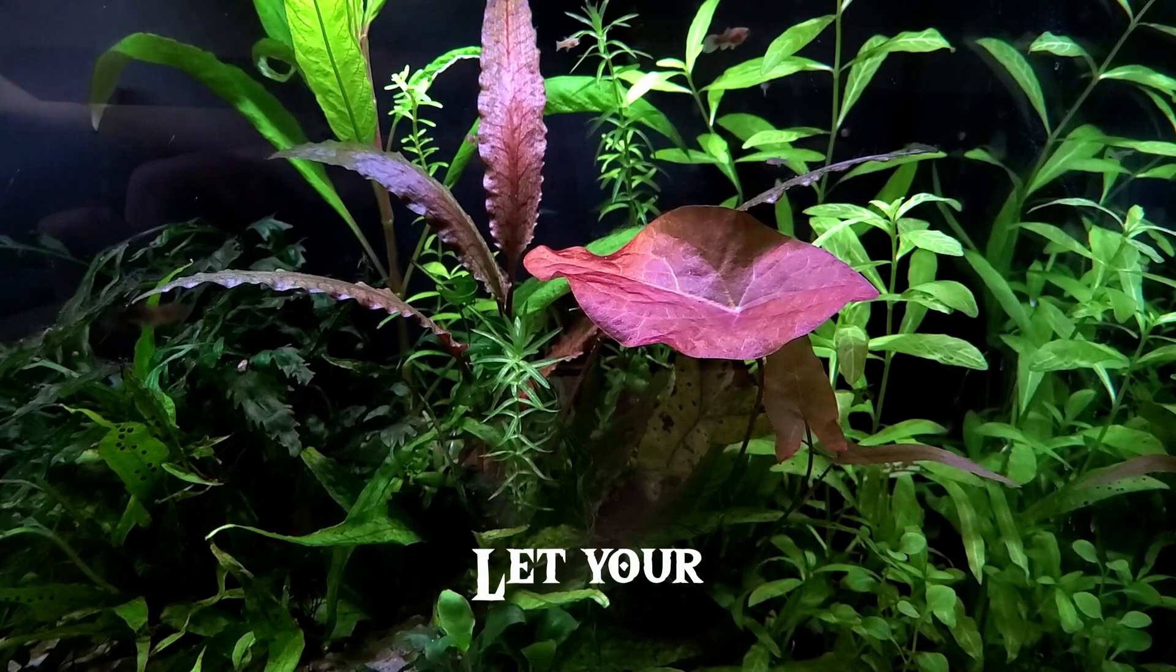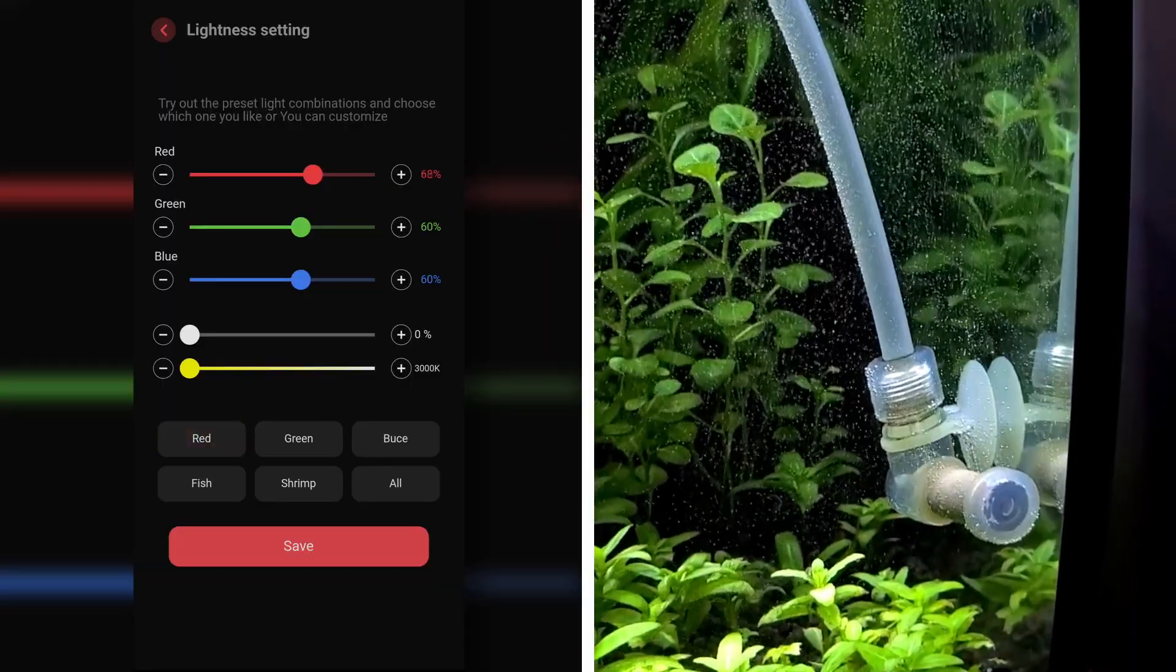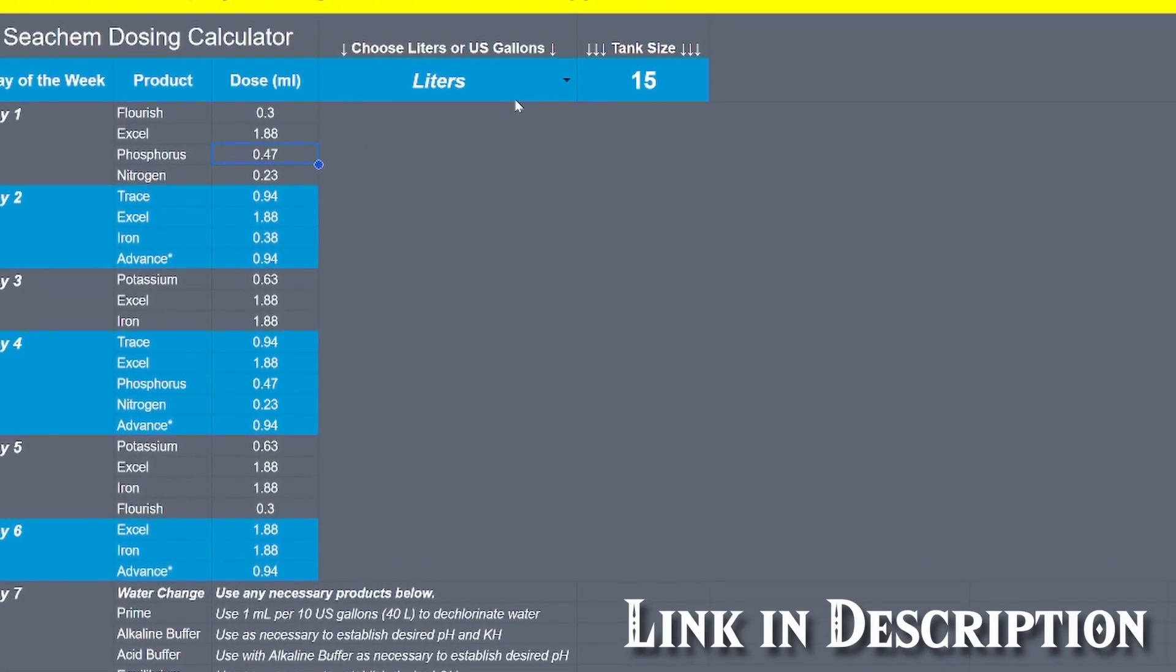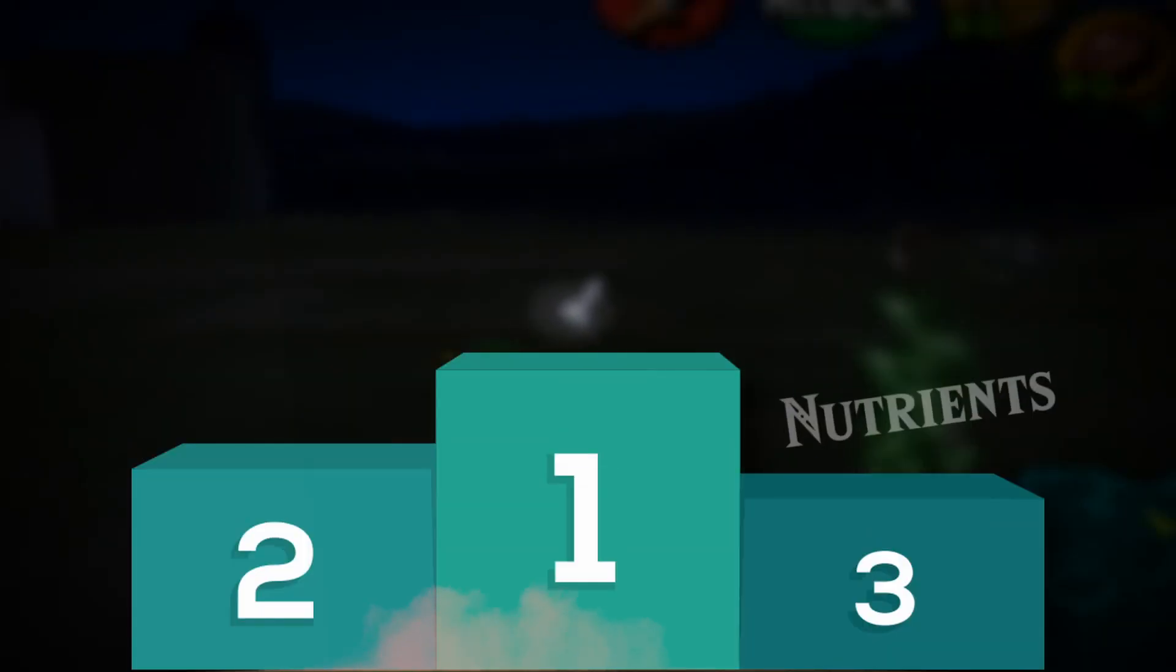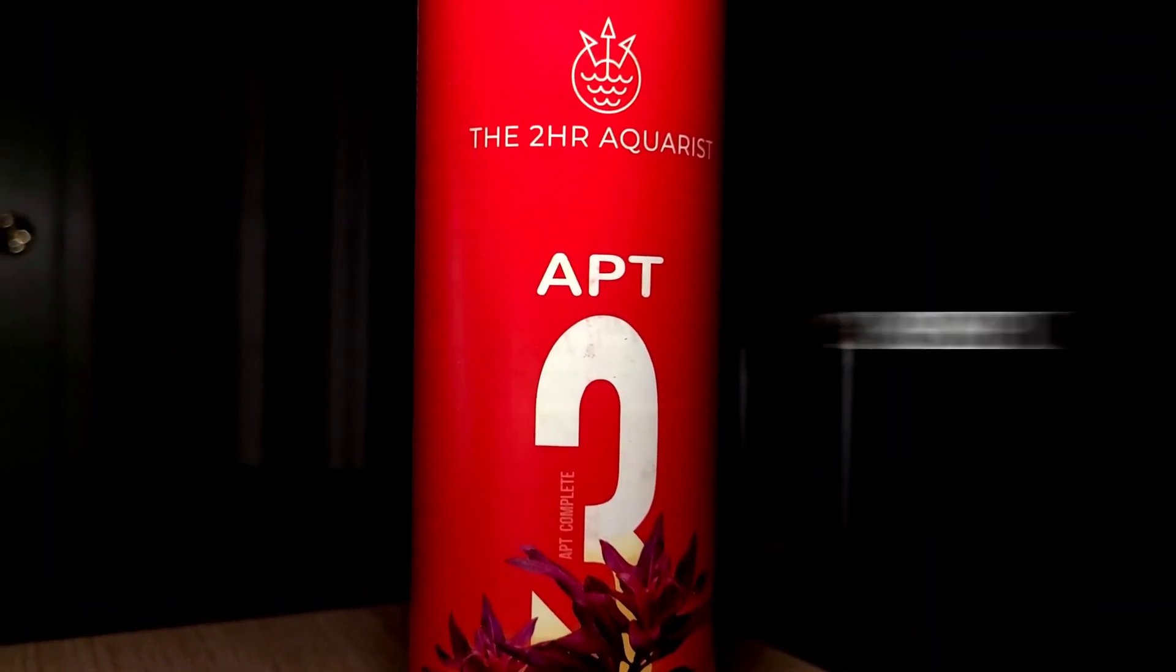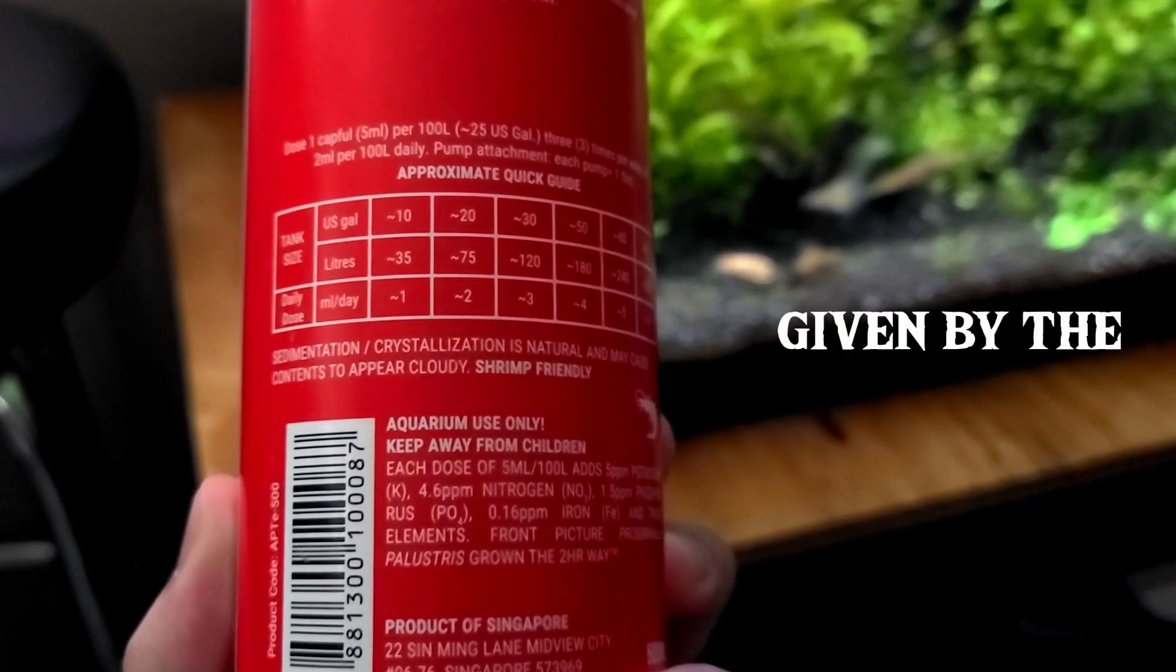As for nutrients, let your plant's health be your guide. If you tuned both lighting and CO2 and your plants are still showing deficiencies, you can adjust your regime efficiently by increasing the amount of nutrients you give. However, nutrients is technically the lowest priority compared to the other two. The best way to go at this is to simply follow the instructions given by the manufacturers.